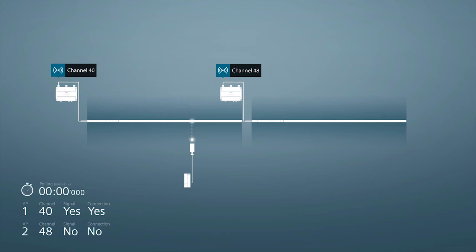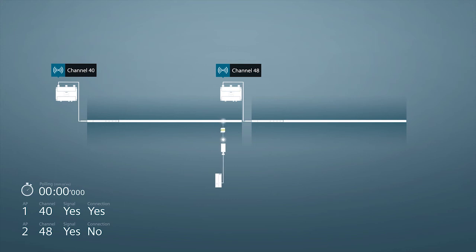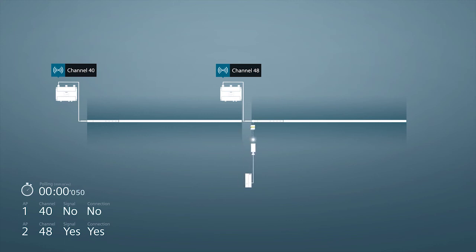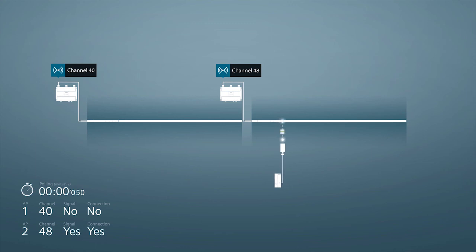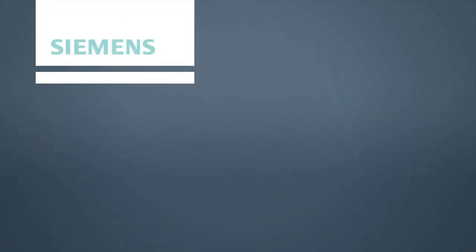The roaming process, shown here on the example of a RCOX application, takes place as follows. The client leaves the wireless field of access point 1 and enters the wireless field of access point 2. The connection to access point 1 is interrupted, and the client now scans all known channels. The client connects to the access point with the best signal strength, or the next available access point in the scan sequence — in this case, access point 2. The communication is not interrupted in the process.